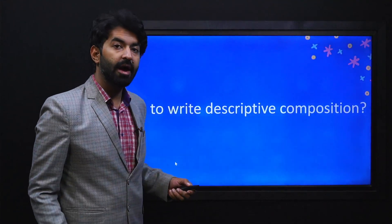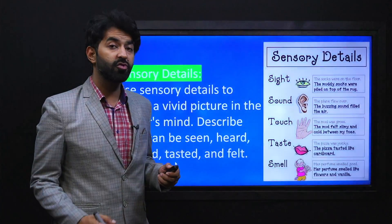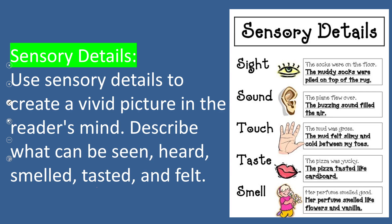How do we write descriptive composition? Let's look at some tips and tricks. Number one is using sensory details. Since descriptive writing is all about giving details — of the character, place, thing, traits, and characteristics — we use sensory details to create a vivid picture in the reader's mind. Describe what can be seen, heard, smelled, tasted, and felt. We are dealing with our five senses.